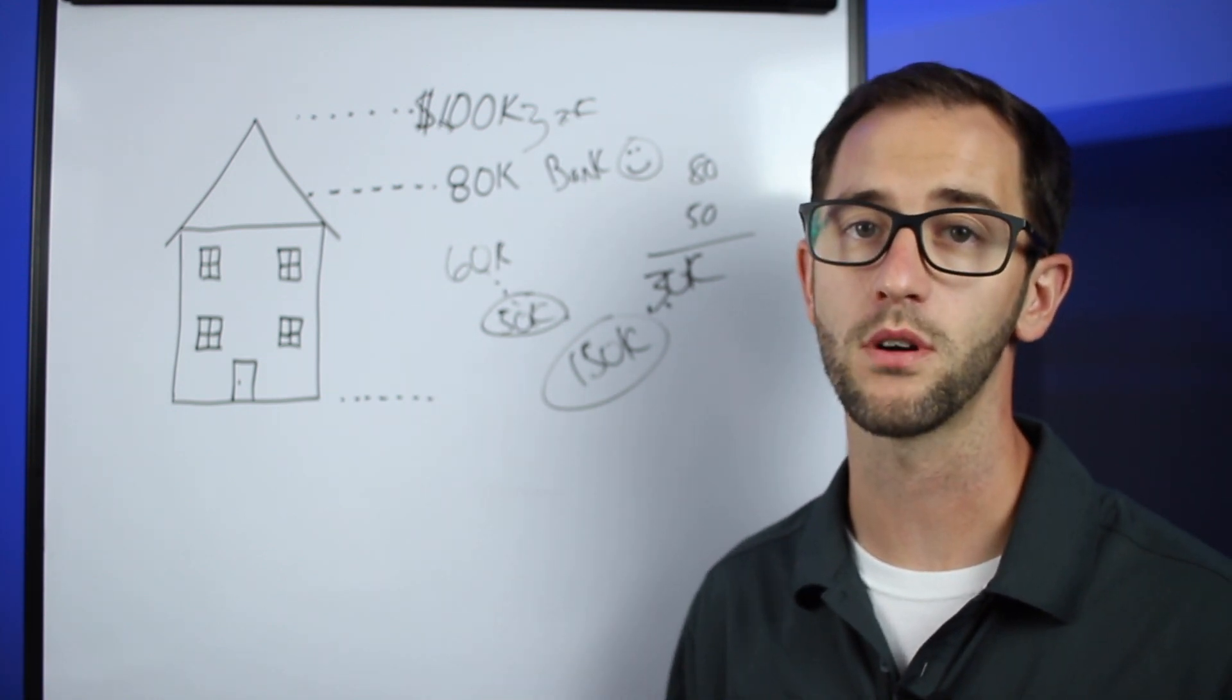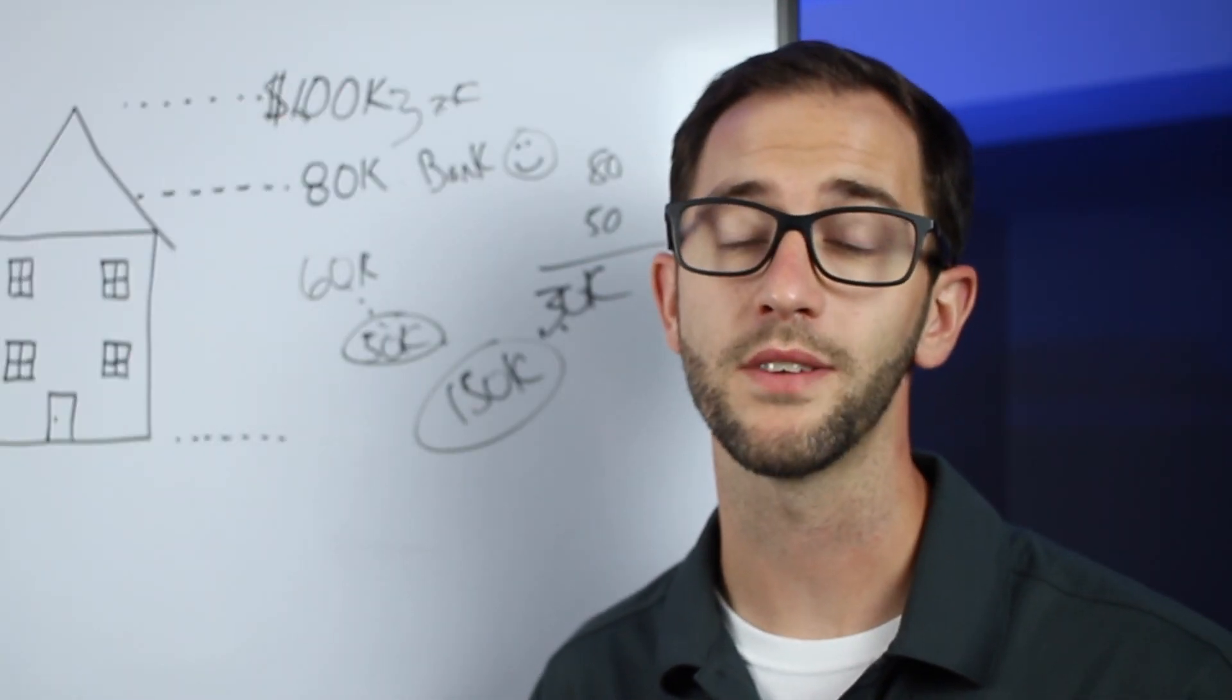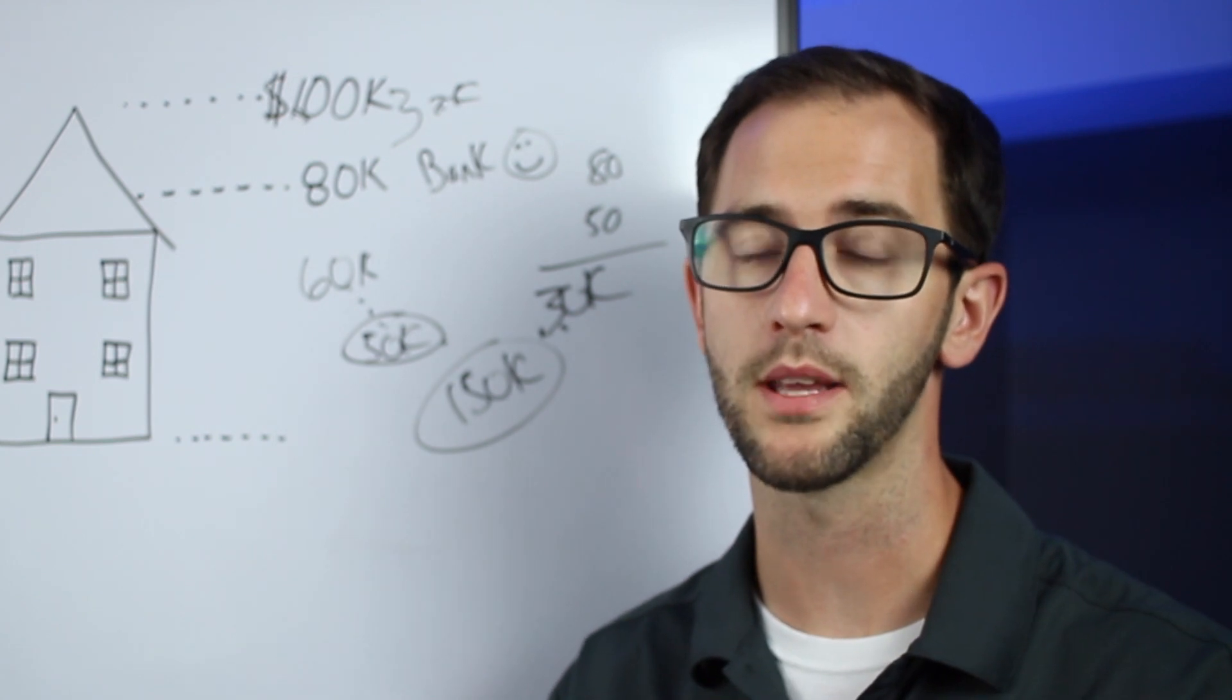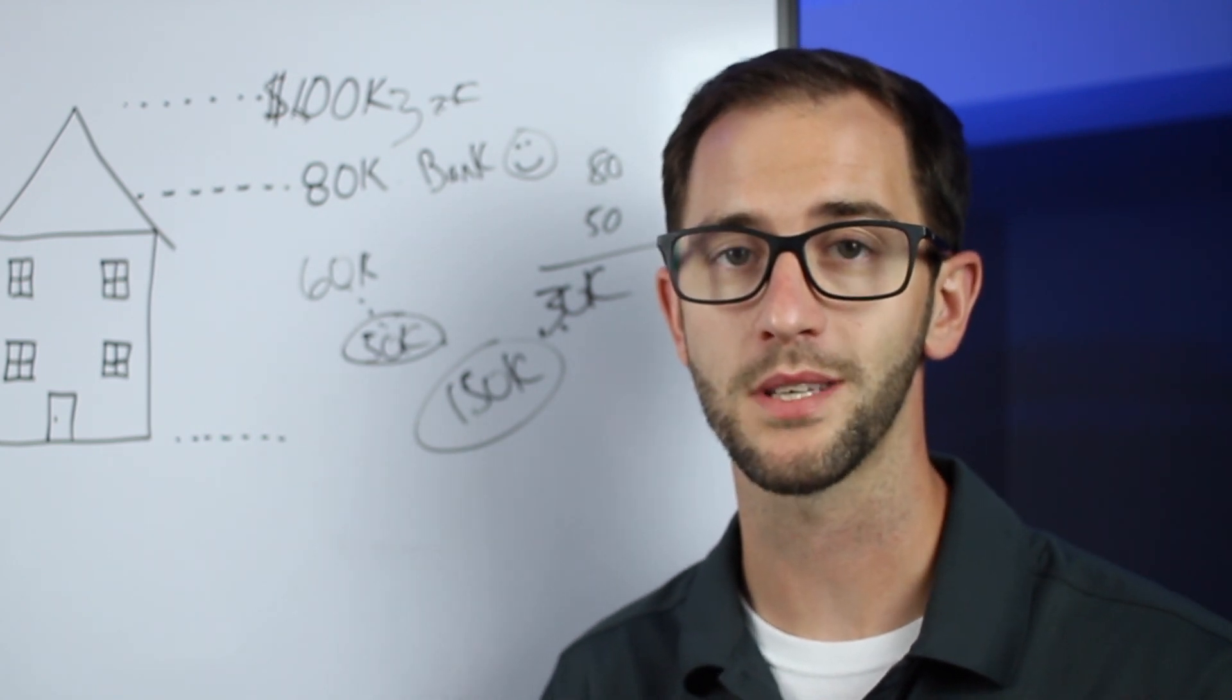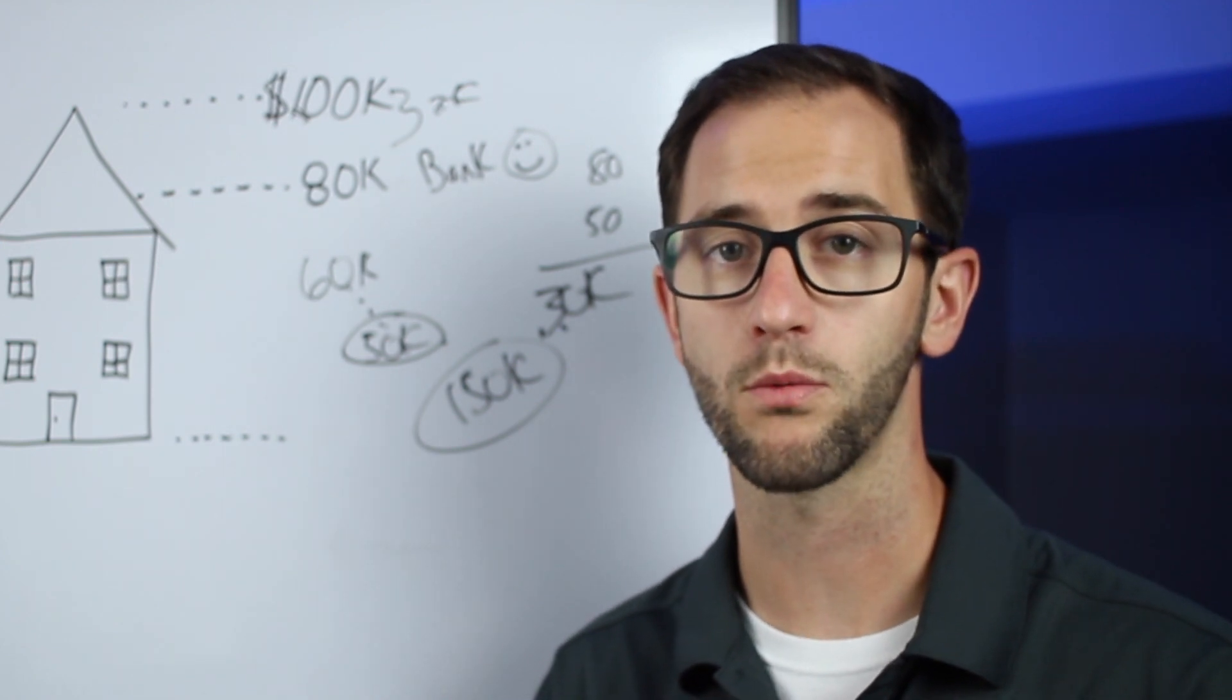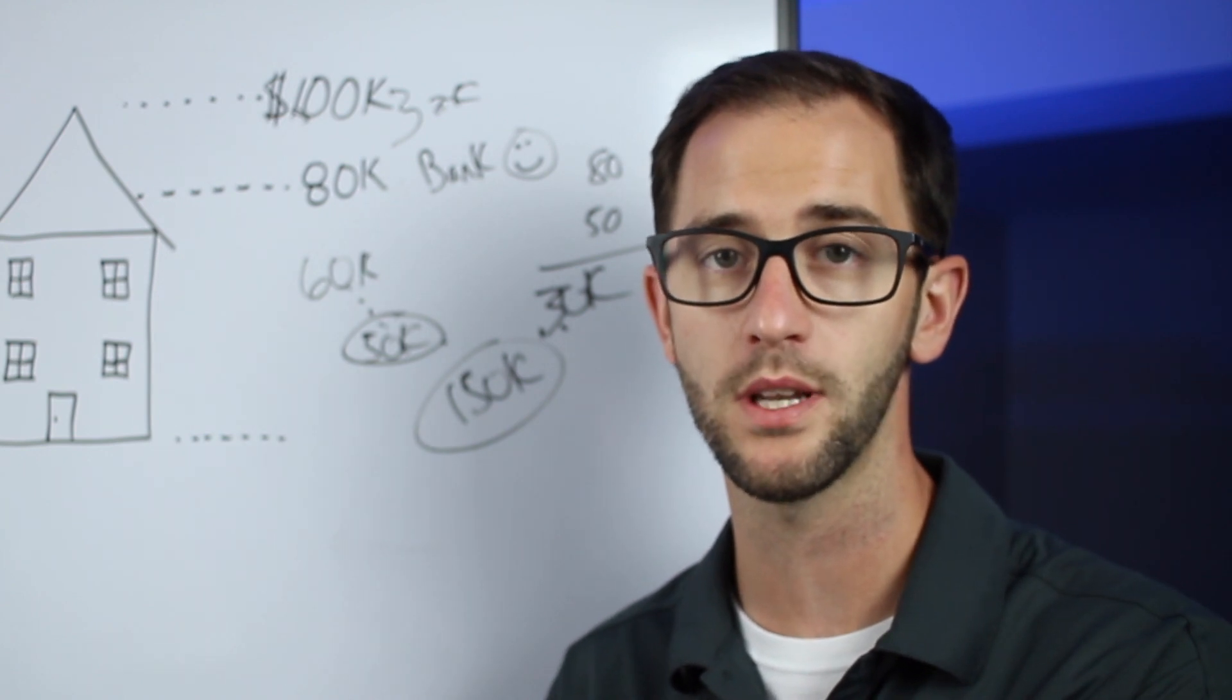So that's the power of the HELOC but there are a couple of things that you have to be aware of. The first thing you want to be aware of is a HELOC, when you take this thirty thousand dollars out and put down on a property, that thirty thousand dollars becomes an interest-only payment, sort of like a credit card rather than compared to a normal mortgage payment that has a principal pay down aspect to it.